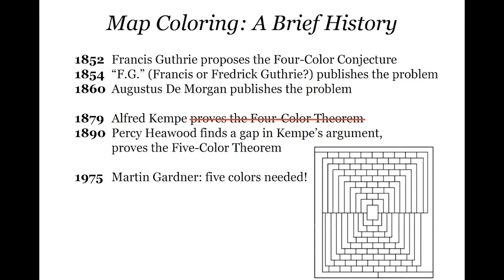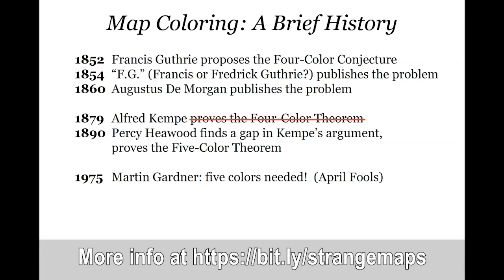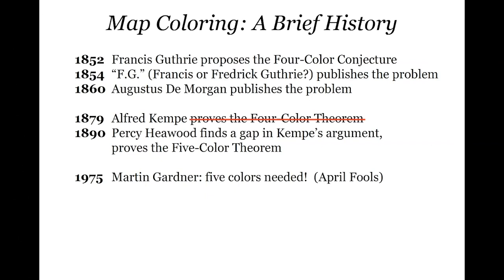There was an amazing breakthrough published by Martin Gardner in his famous column. He announced the amazing result that you actually need five colors, and he showed a particular map that required five colors, which surprised everyone and had people frantically trying to color it. A bunch of people wrote in to complain that they could do it in four — because they hadn't noticed this was the column for April of that year. This was part of a now infamous April Fool's column Gardner put out about six of the biggest advances in mathematics that previous year, which were all fake.